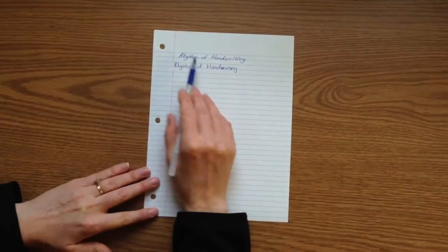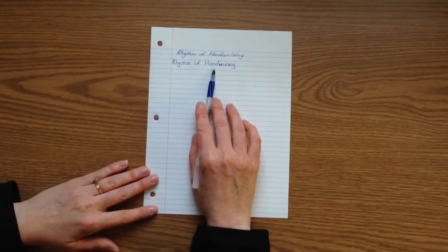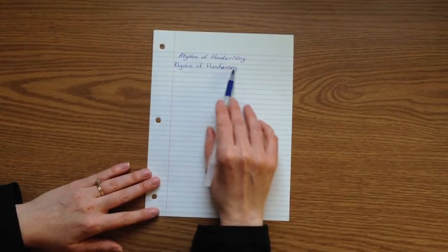Many people ask, why is the rhythm of handwriting written at a slant rather than using the traditional block face letters that are written straight up and down?